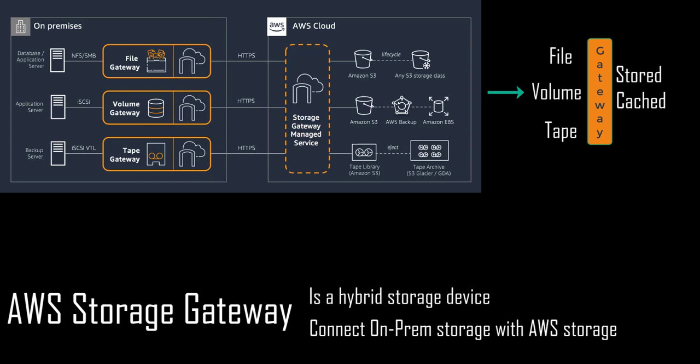Tape gateway is designed for long-term off-site data archiving in the cloud. Many customers previously had tape backups on-premise with arrays of tape libraries, but tape as a medium is unreliable — imagine trying to restore critical data from a tape and finding nothing there. With the tape gateway, data is archived in the AWS cloud, eliminating concerns about tape reliability. That's all for this lesson on Storage Gateway. Thanks for watching and I'll see you in the next lesson.